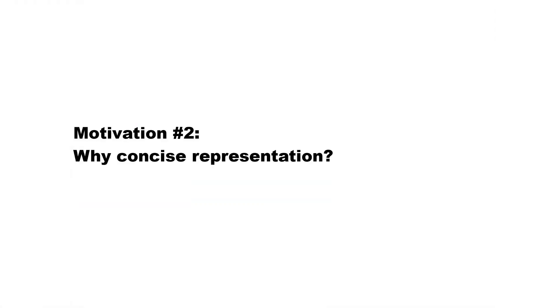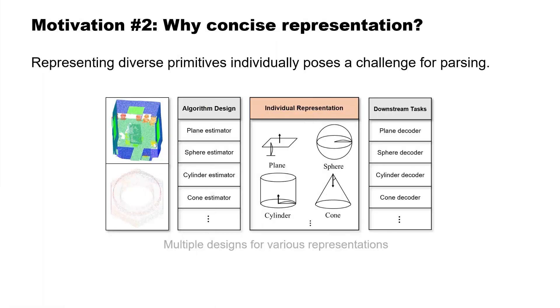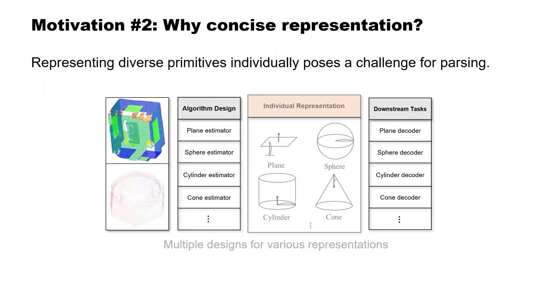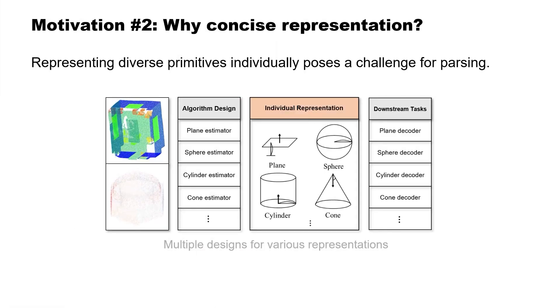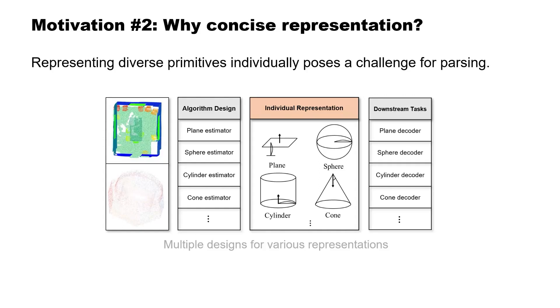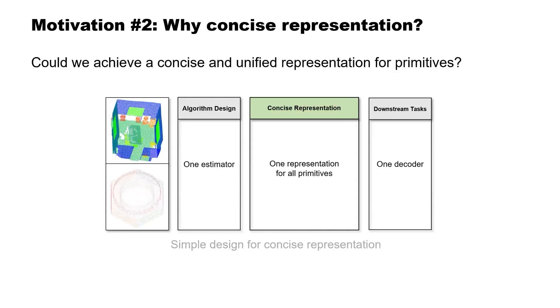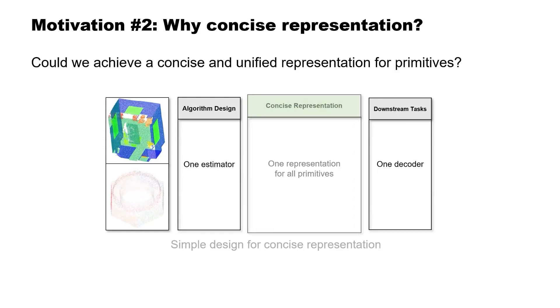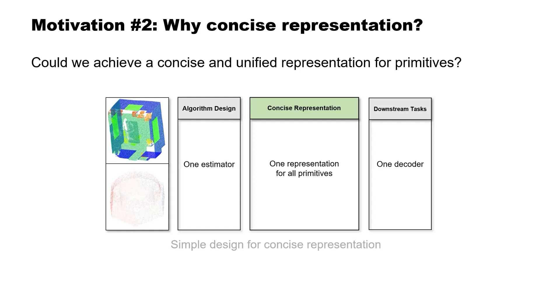Motivation 2 — why concise representation? Previous works represent diverse primitives individually, which poses a challenge for algorithm design and downstream tasks. Could we achieve a concise and unified representation for primitives?